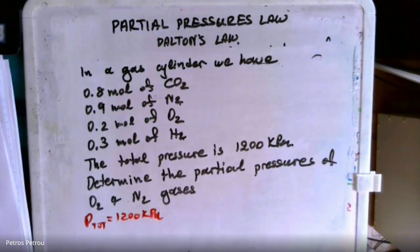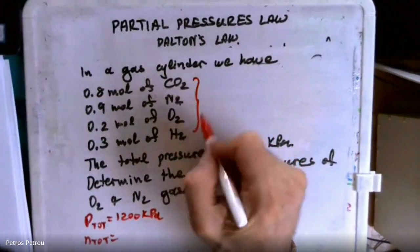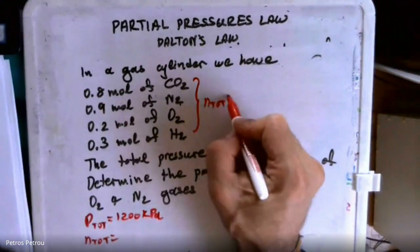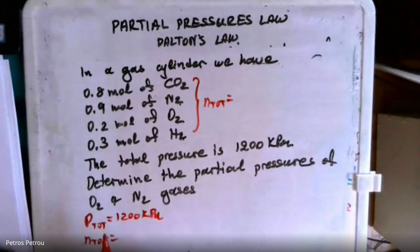So the total moles, the n total, it will equal what? Well, you have to add everything that we have here. So the n total, I would also mark it there because it's going to be much easier. We have 0.8 plus 0.9 plus 0.2 plus 0.3.